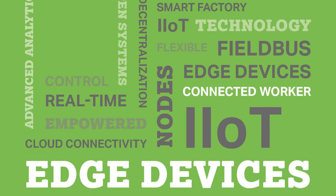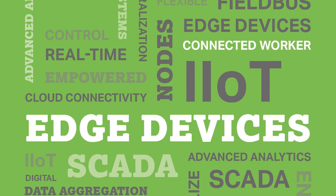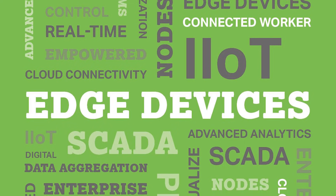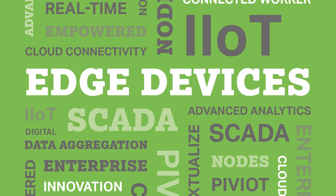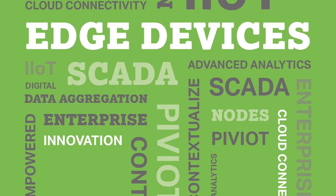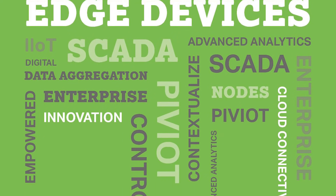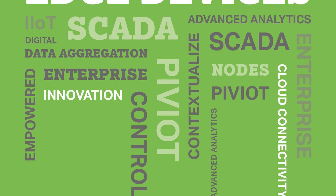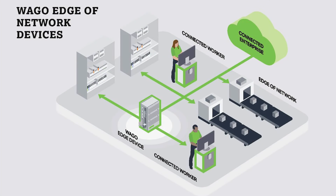Or it can be used to extend the cloud down to the plant floor with applications like Software AG's Cumulocity or Inductive Automation's Ignition Edge. Both of these devices can be used as a gateway between the plant floor and cloud-based services via secure protocols such as MQTT and OPC UA.